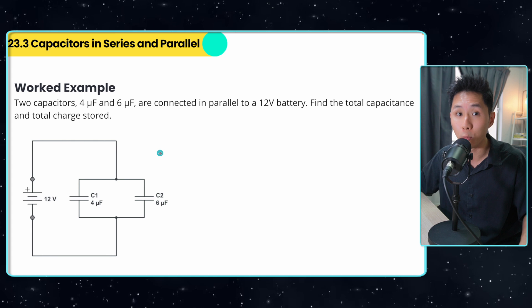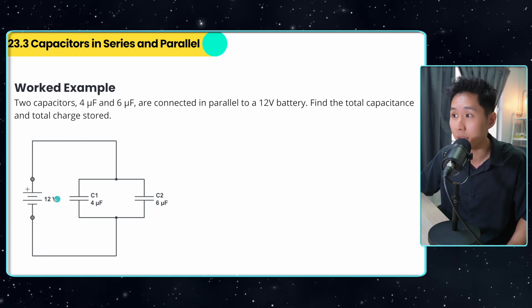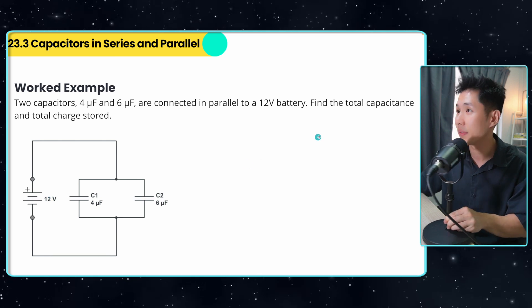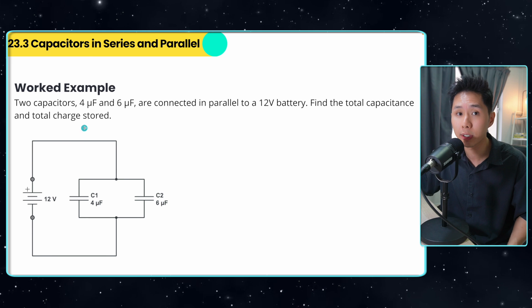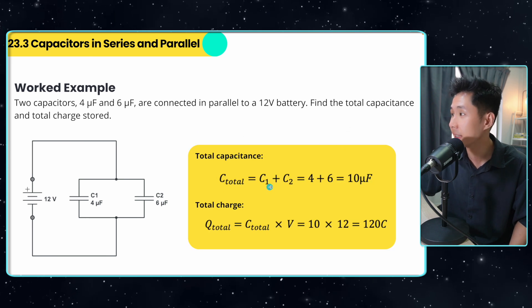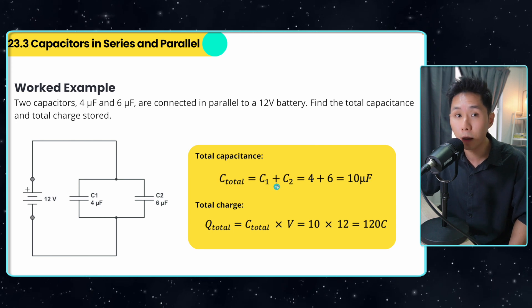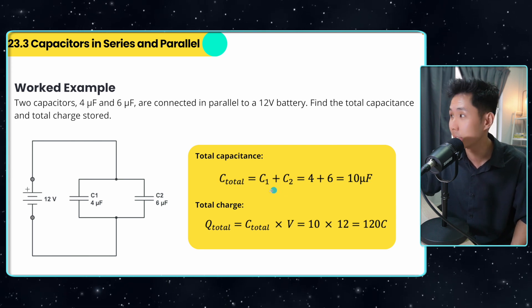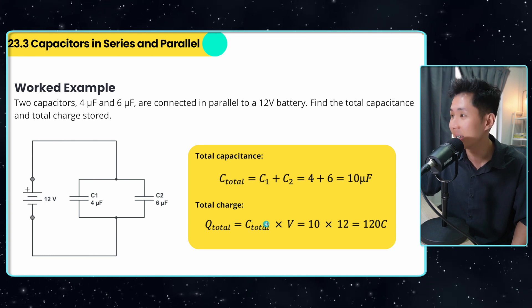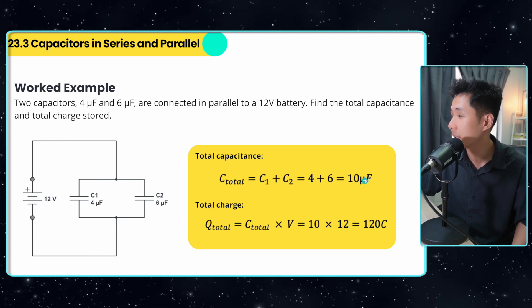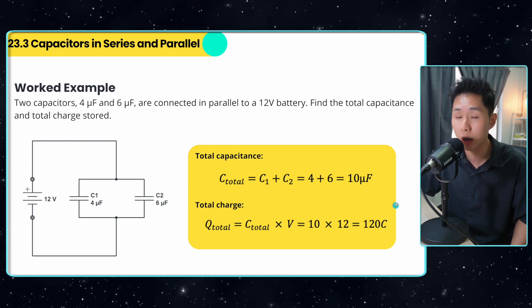Now, without further ado, let's try to solve some worked examples. I have two capacitors arranged in parallel connected to 12 volts. And they asked me to find out what's the total capacitance and the total charge stored. So to find out the total capacitance, since they're arranged in parallel, just add them up. Remember, it is the opposite of how you calculate resistance. So don't make the mistake. Total charge. So just use the same formula again, because you have figured out the combined capacitance, just substitute into the equation, and you have gotten the total charge.